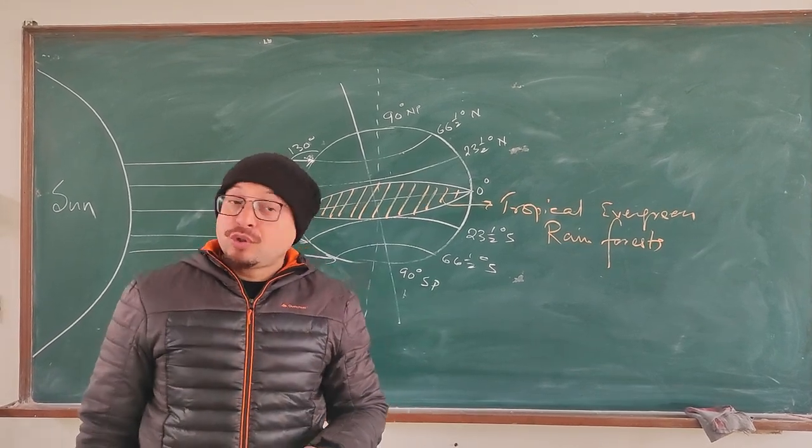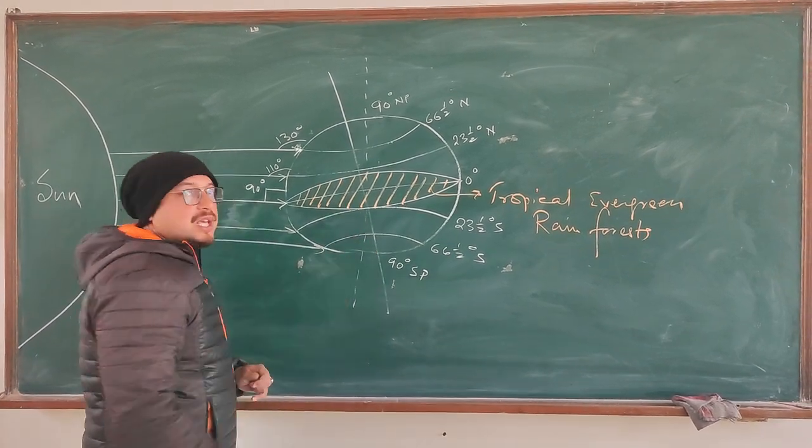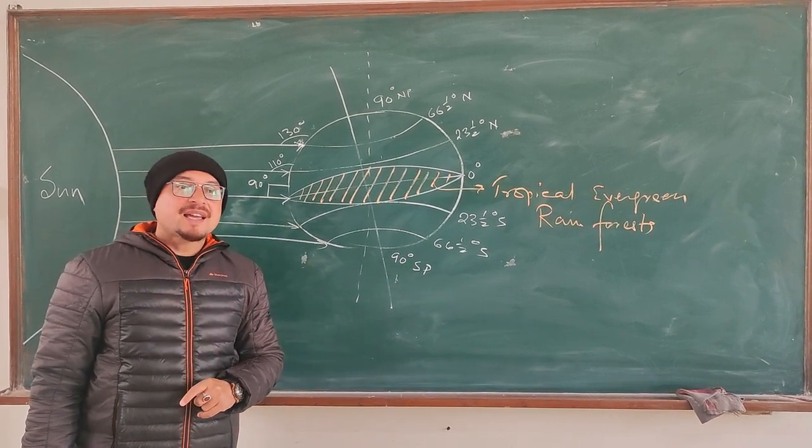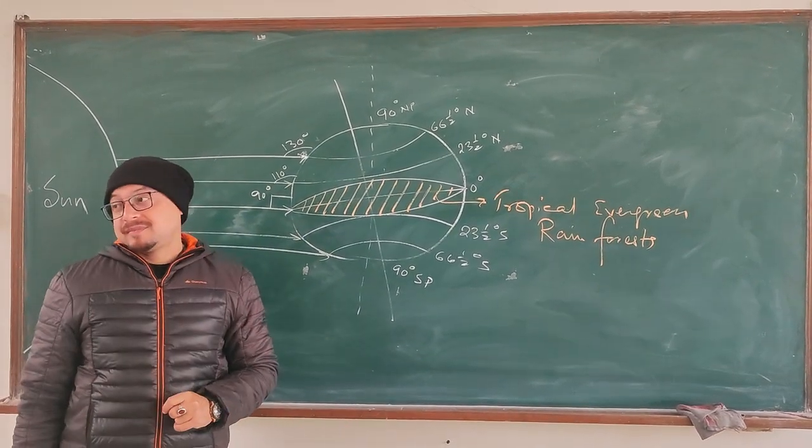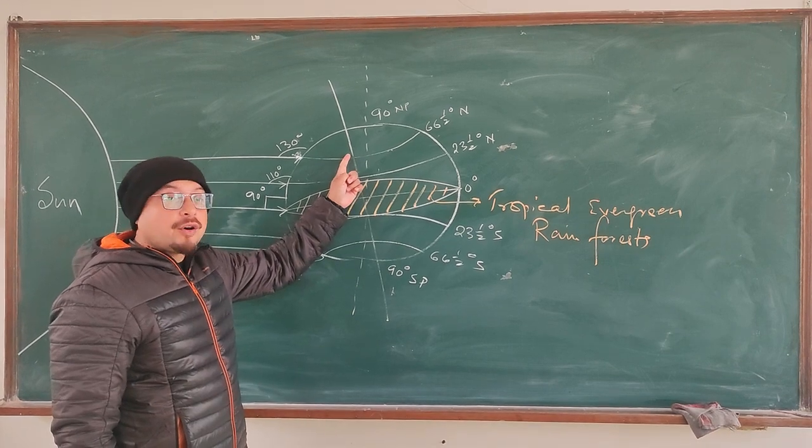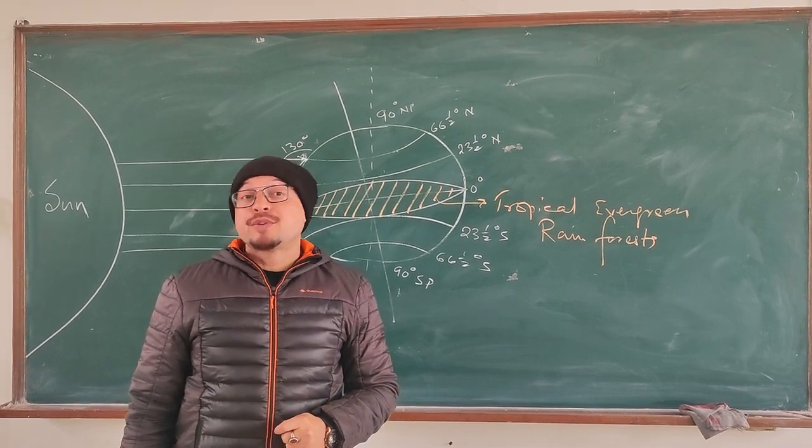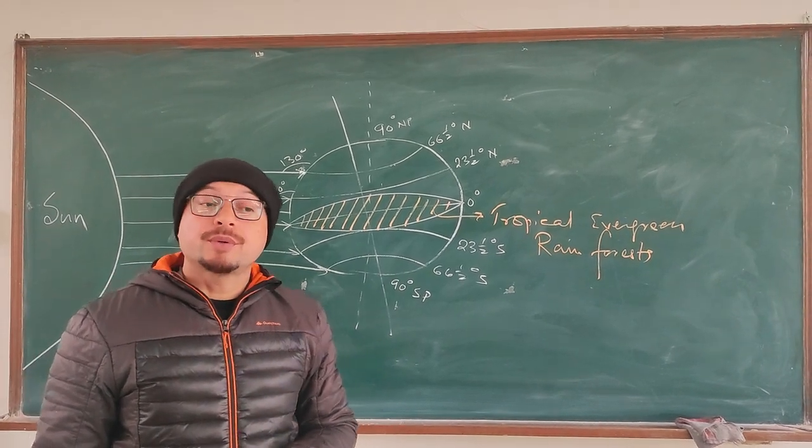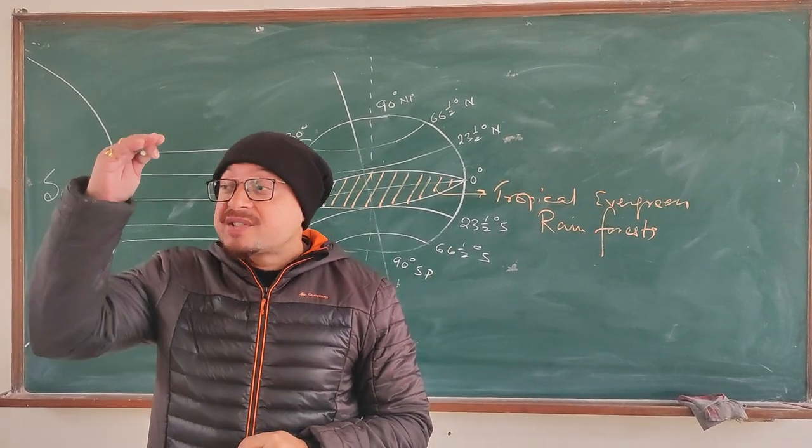And hence the temperature would drop. So that means as we move up the equator or down the equator, the temperature would go on decreasing. Because the sunlight is not as intense as it is near the equator. So therefore, temperature would drop down, and hence instead of rainfall, as we move towards the poles, there would be snowfall. So precipitation occurs in the form of snowfall as we move towards the poles, and precipitation takes place in the form of rainfall as we move towards the equator.